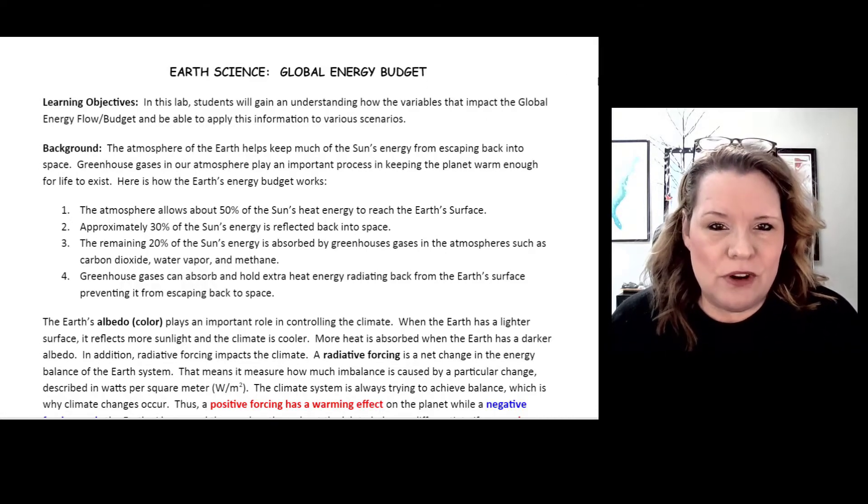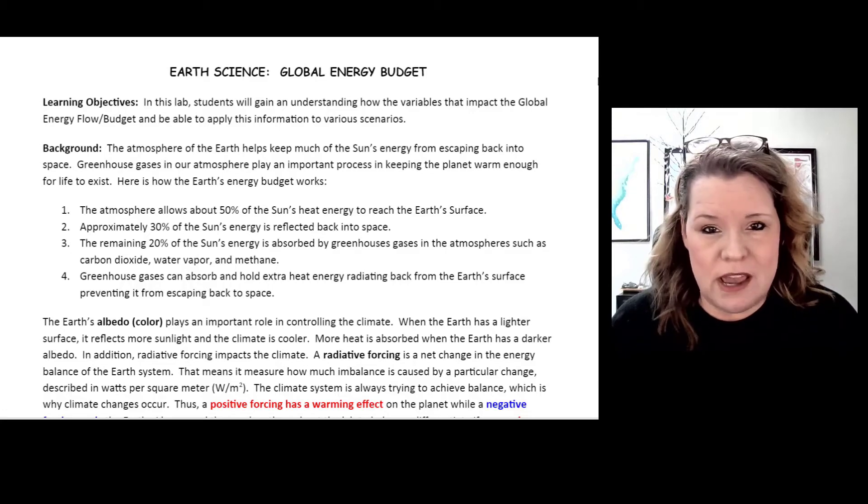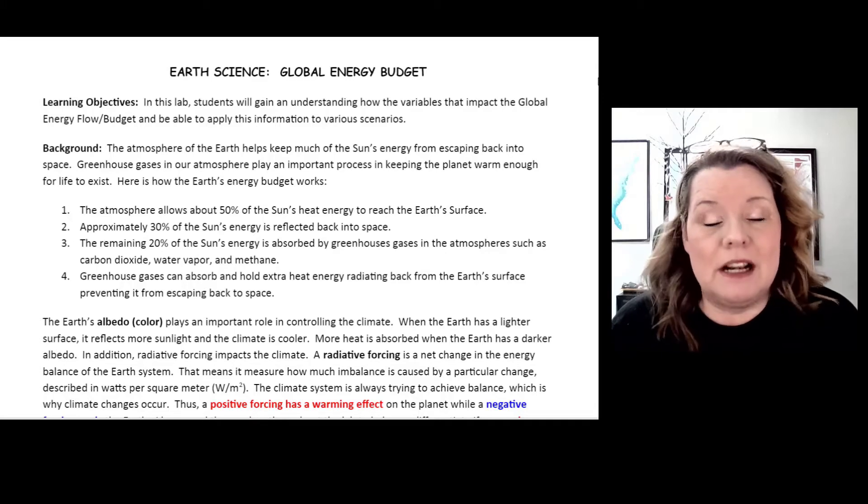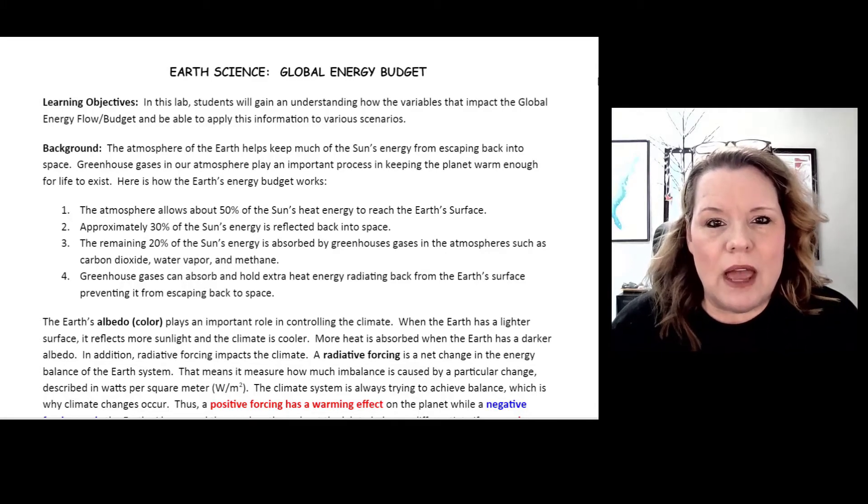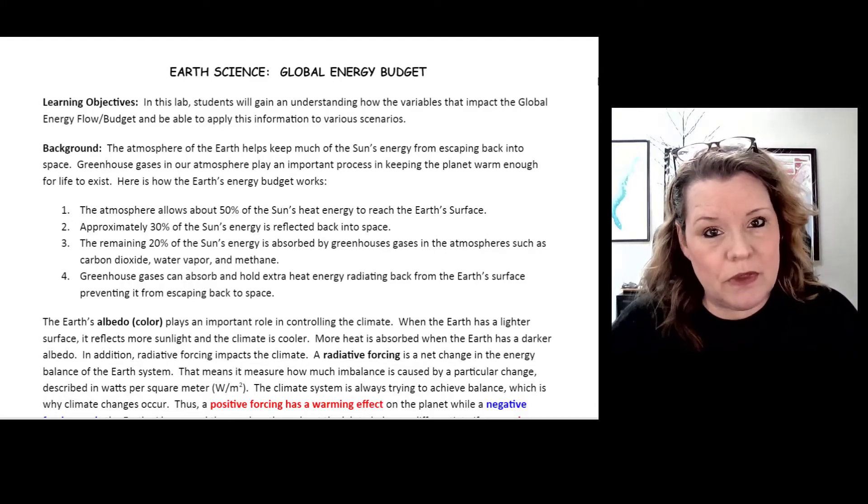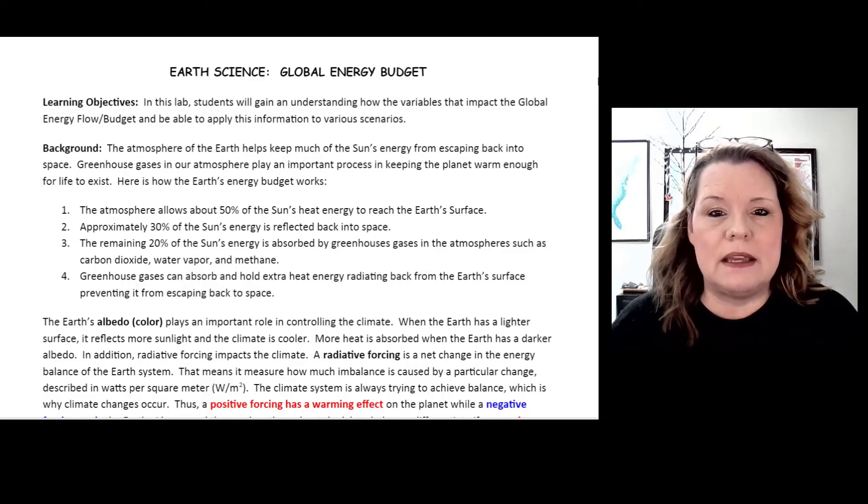We have a certain amount of solar radiation that comes in from the sun. Some of that automatically gets reflected back to space because of our cloud cover and our atmosphere. Then some actually makes it through, and that helps warm up the planet.